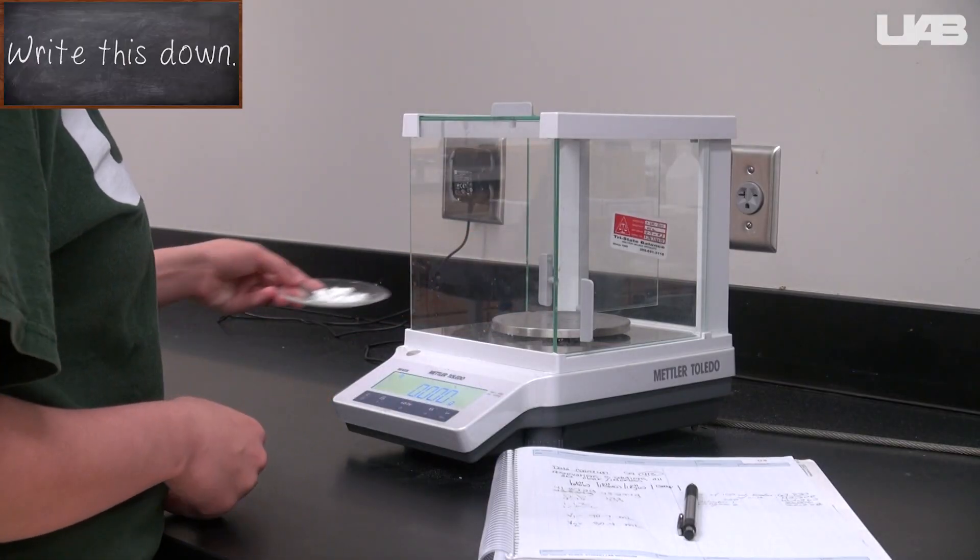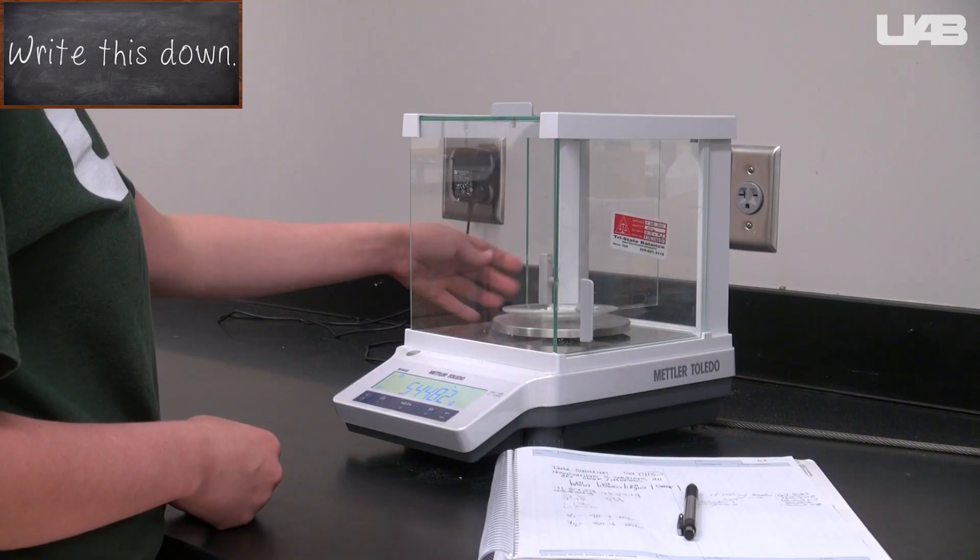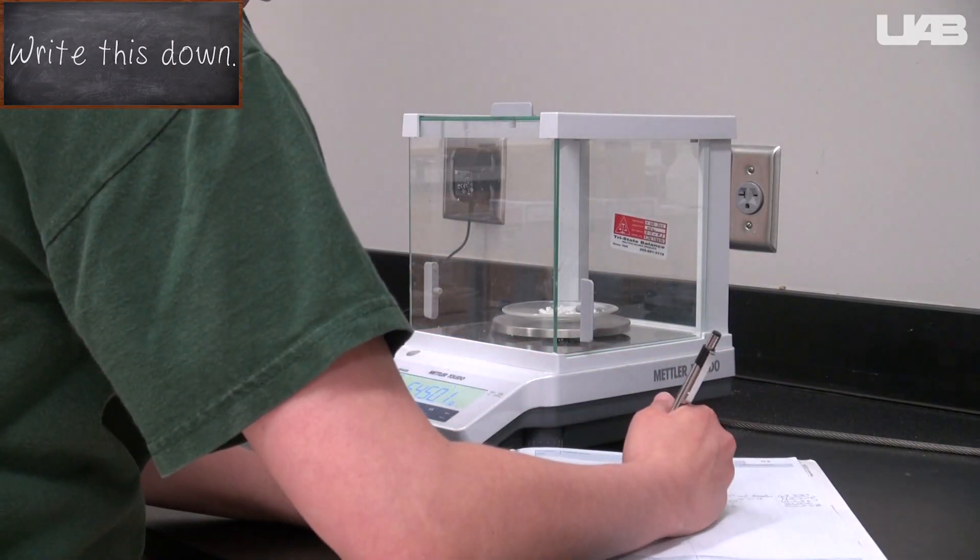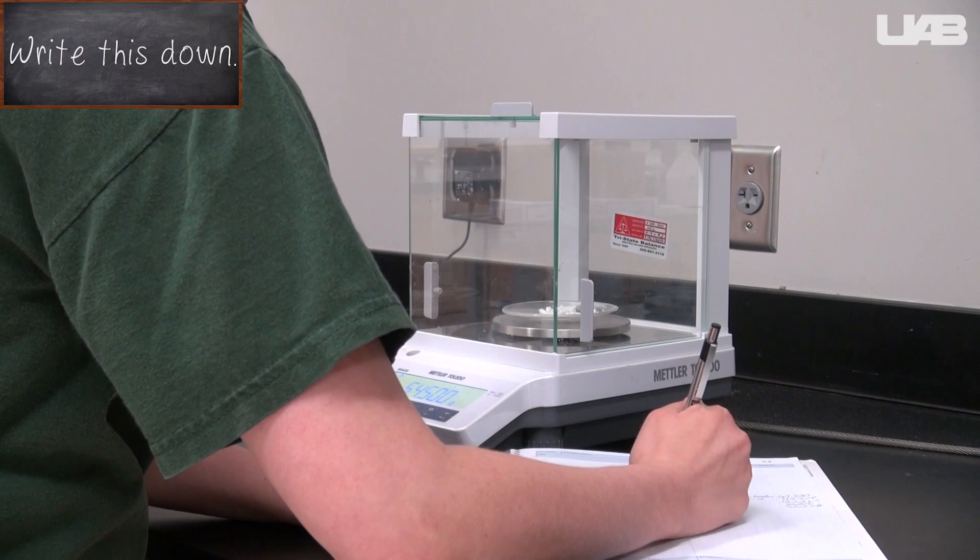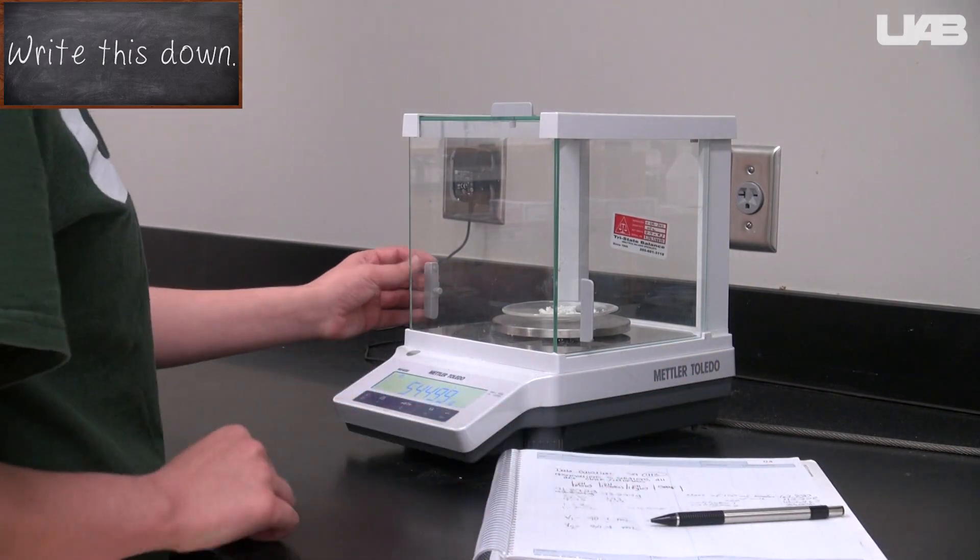Next week, before you start that lab, you should determine the mass of the beaker and the two watch glasses with the various components on them and then compare these masses to the ones that you measured while empty before starting last week.